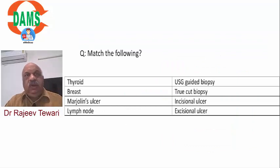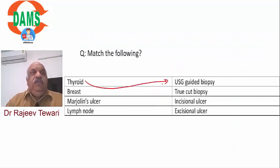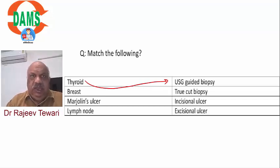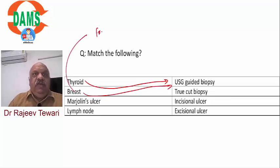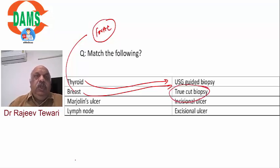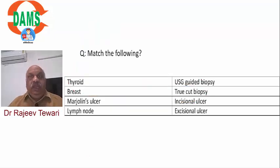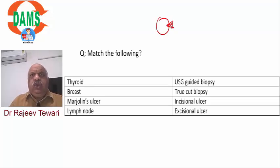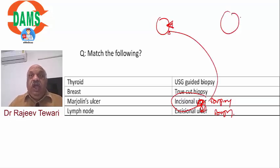Match the following biopsy types: Thyroid - ultrasound-guided biopsy (for barely palpable nodules, USG guides the biopsy to reduce false negatives). Breast - true cut biopsy (needed for ER/PR receptor testing or pre-op chemotherapy - gives tissue, whereas FNAC gives only cells). Incisional biopsy - take a chunk from the edge of a tumor with normal tissue (e.g., oral cavity cancer where you cannot remove the whole tumor). Excisional biopsy - remove the complete tumor (e.g., lymph node, lipoma, sebaceous cyst).